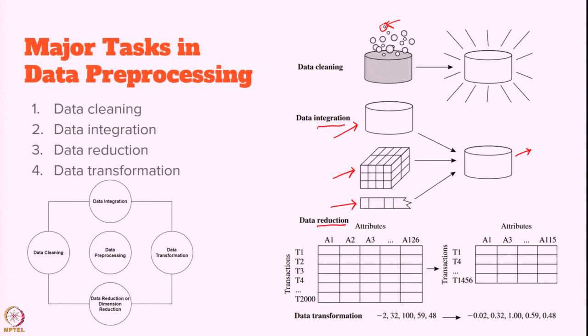The next is data reduction. In data reduction, there will be several attributes and several instances. We convert this data into a format such that the information we get remains the same, but the data is reduced. There are two ways: dimensionality reduction and numerosity reduction. You can check the literature for those two topics.